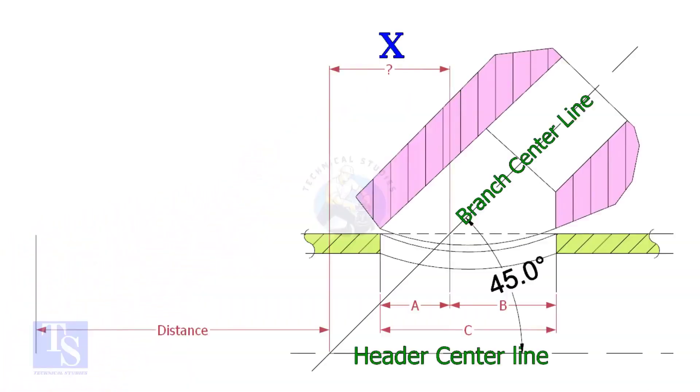Most commonly, laterolettes are used for 45 degree branch connections. In a drawing, the distance to the center of a laterolette is given from a certain point. This distance is actually on the center of the header pipe. By applying a simple calculation, we can find the actual center that comes on the top of the pipe.